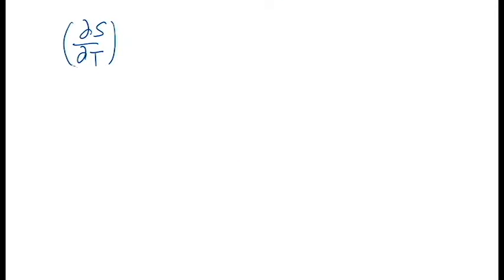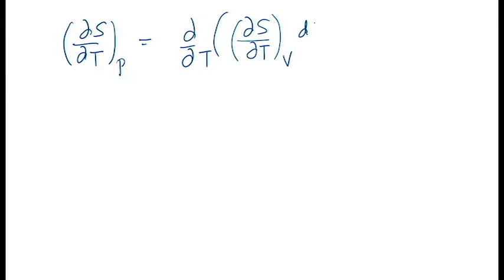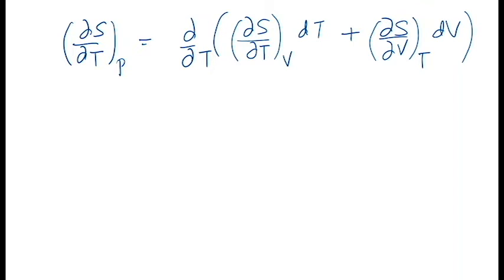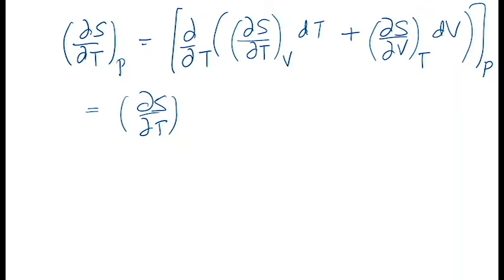To find (del S / del T) at constant pressure, we write dS as (del S / del T) at constant volume times dT, plus (del S / del V) at constant temperature times dV, and then differentiate with respect to T at constant pressure.